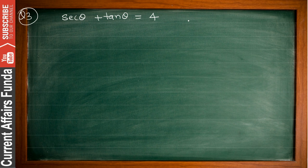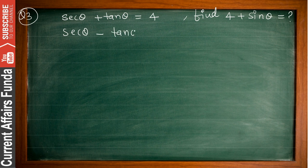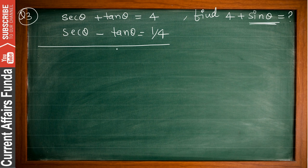Question 3: if sec θ + tan θ = 4, you need to calculate 4 + sin θ. The basic fundamental approach as usual: sec θ − tan θ = 1/4. We need to find the value of sin θ, so we save tan θ because tan θ = sin θ / cos θ, which helps us find sin θ.